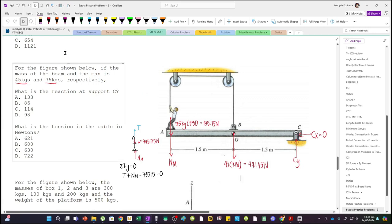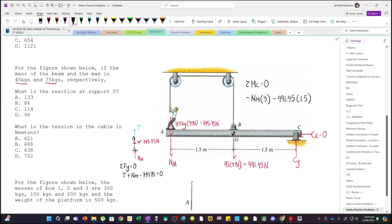Externally, sum up moments about C. We have negative NM multiplied by 3 meters, and then minus 441.45 multiplied by 1.5. And don't forget there's tension, tensile force. The tension force runs across the cable, so there's also tensile force here.